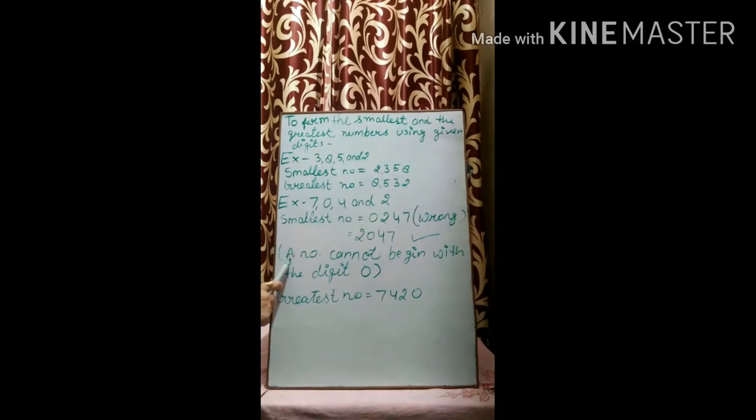Keep in mind, a number cannot begin with the digit 0. First of all, we will write the second smallest digit, that is 2. Afterwards, we will write 0, then 4, and then 7.